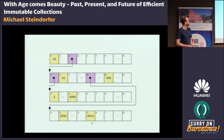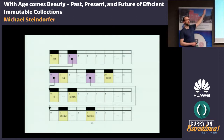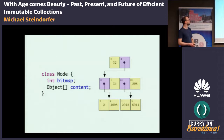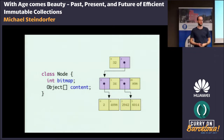What Bagwell's paper proposed was to use bitmaps to designate which of the slots is actually in use. By using bitmaps, we can then compress the structure and remove all the empty slots, giving us a concise representation. In the code skeleton, we have a 32-bit bitmap and then an array that can grow up to 32 elements long.